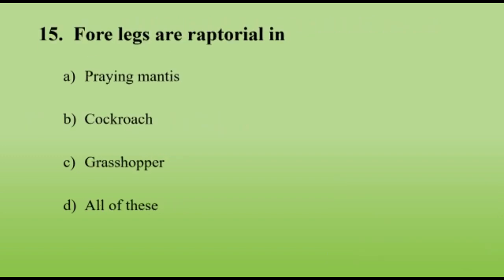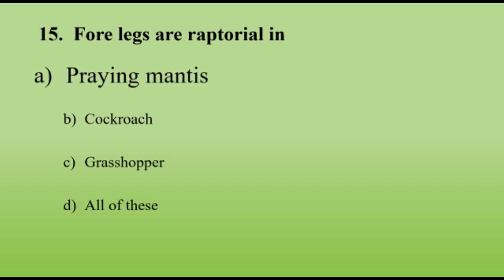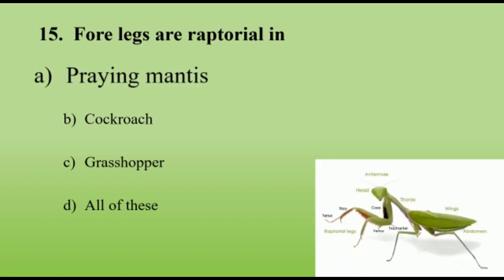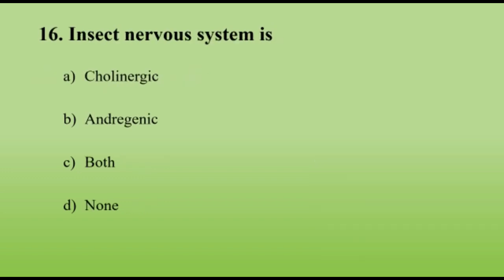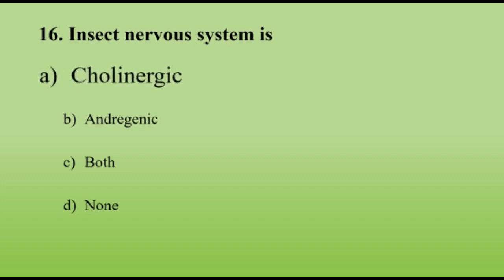Forelegs are raptorial in praying mantis; raptorial forelegs increase their predating efficiency. The insect nervous system is cholinergic, since acetylcholine is the neurotransmitter present in them.